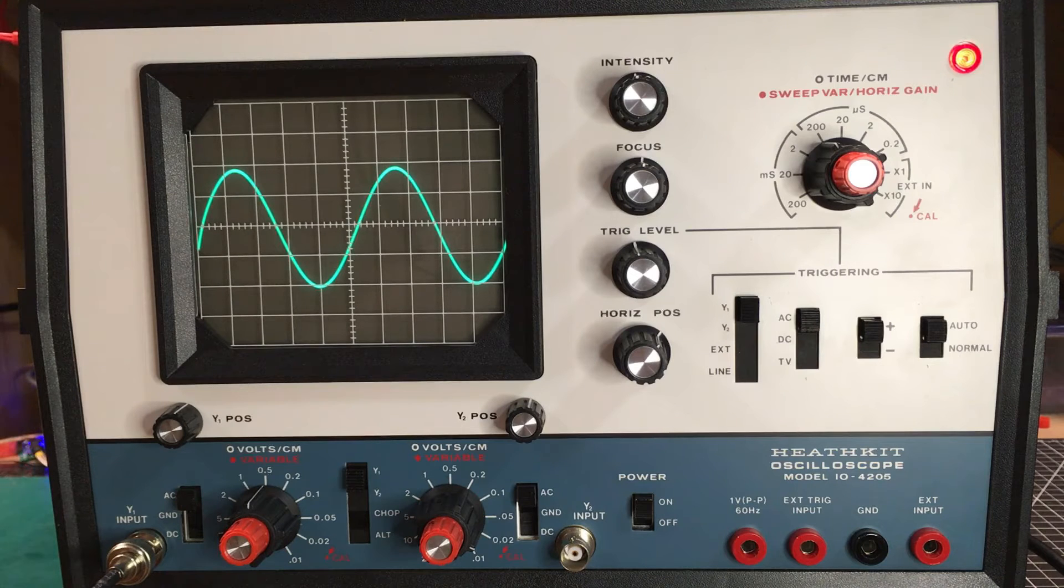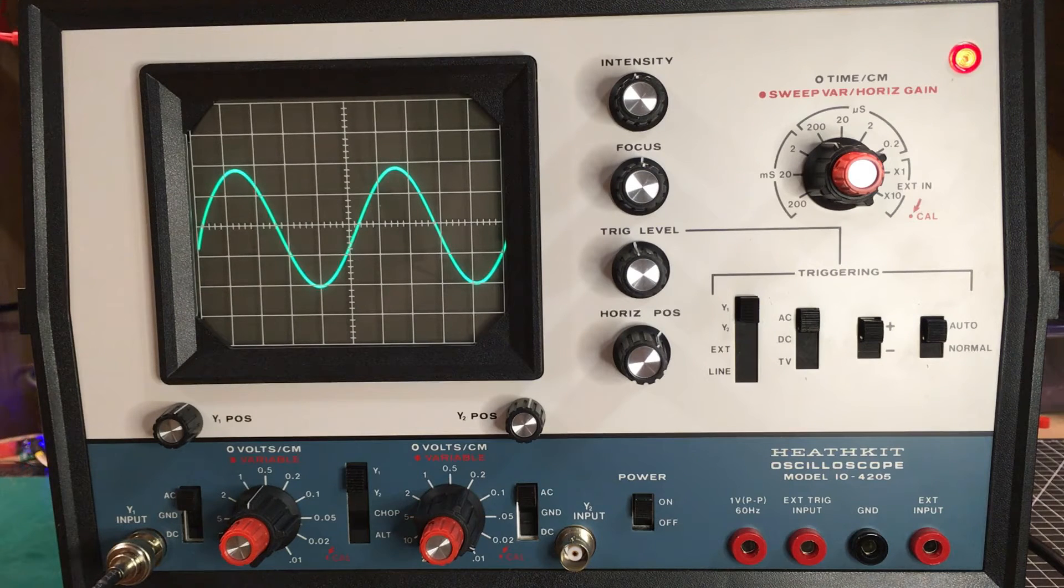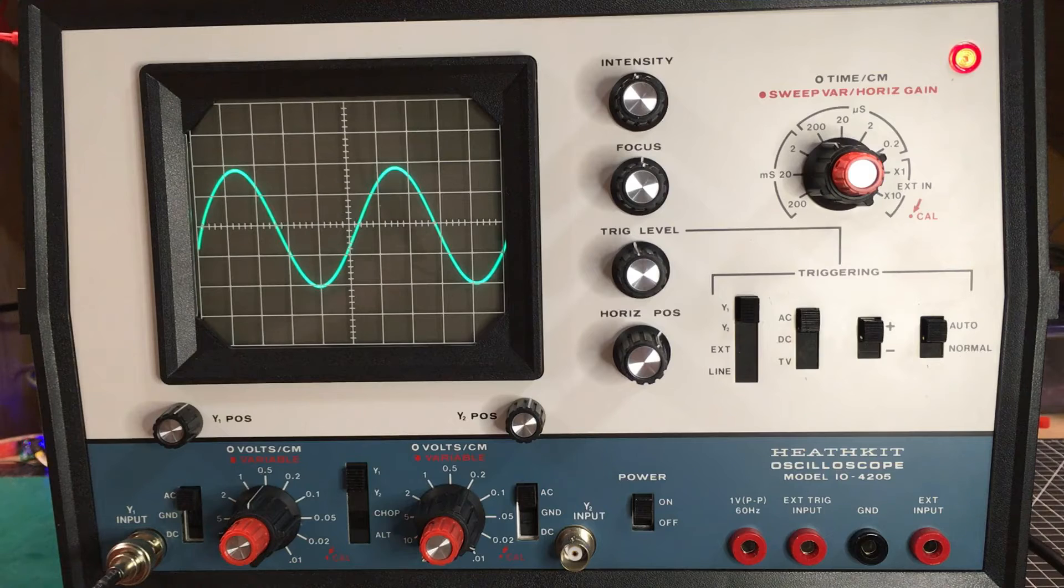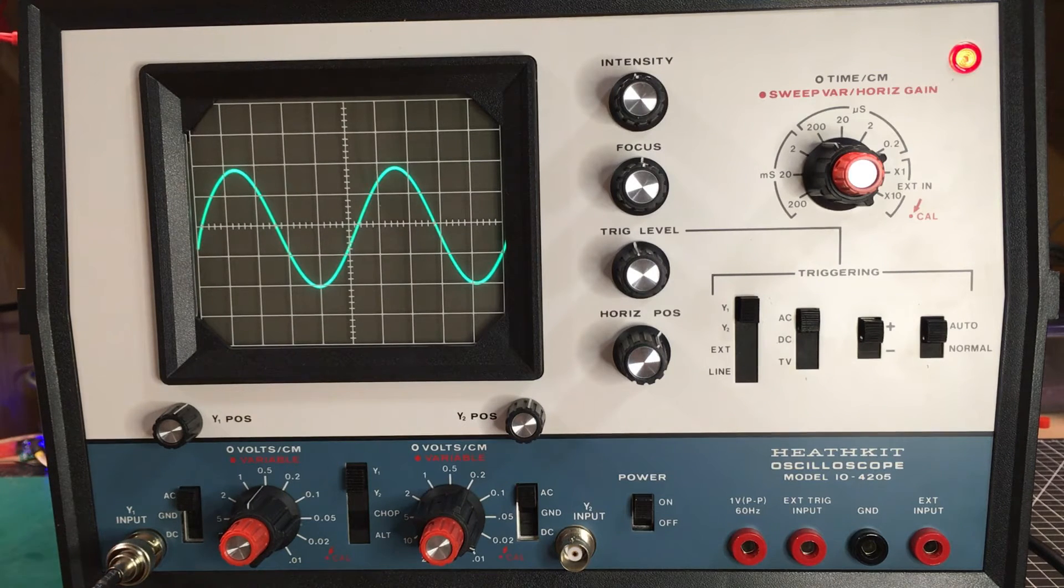But that's basically how we set up the scope to see an unknown signal. If you follow that procedure, you should be able to get any signal coming in and be able to trigger on it. If it's a triggerable signal, something like random noise and stuff like that, you're not going to be able to trigger very well on it, regardless of what you do. So let's do some basic measurements here.